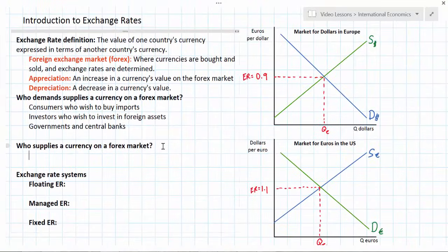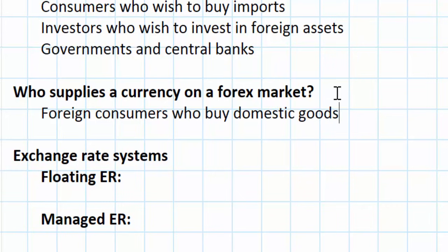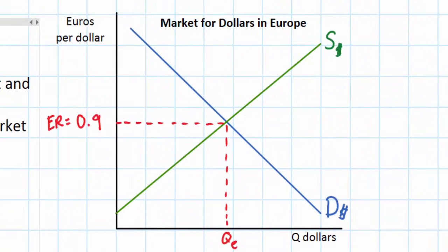Who supplies currency in a forex market? Looking at the European market for dollars and the green supply line: it's essentially the opposite of the demanders. Rather than European consumers buying American goods, it's foreign consumers buying domestic goods who supply their currency to acquire the domestic currency. Dollars end up in Europe because Americans are buying European goods — as they do, they demand euros and supply dollars, creating a supply of dollars in the European forex market.